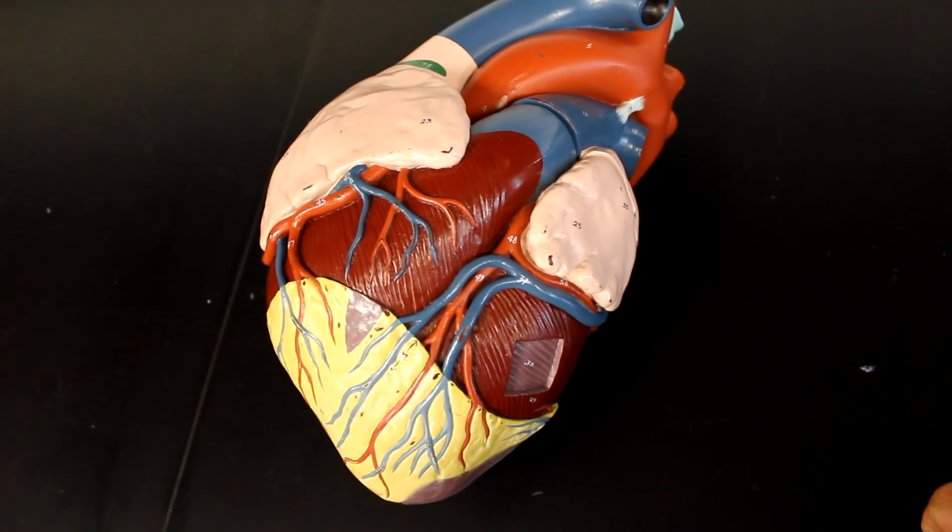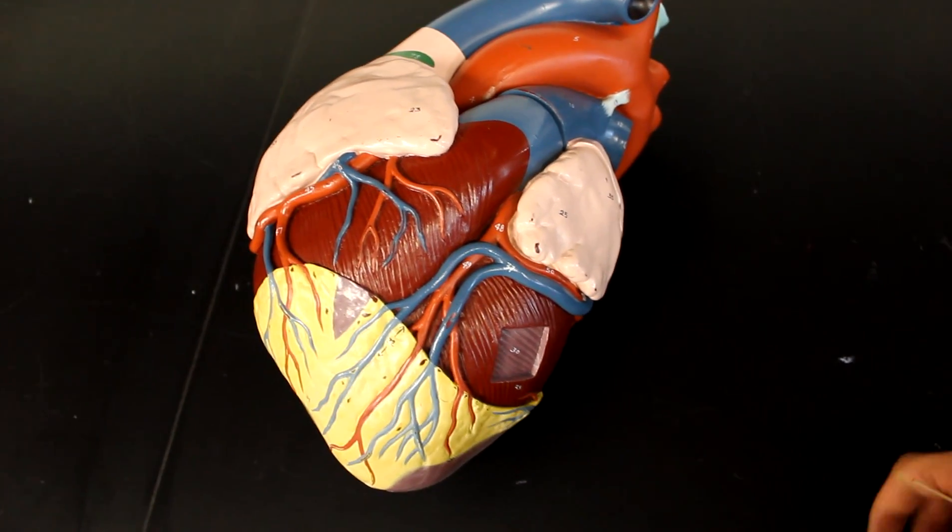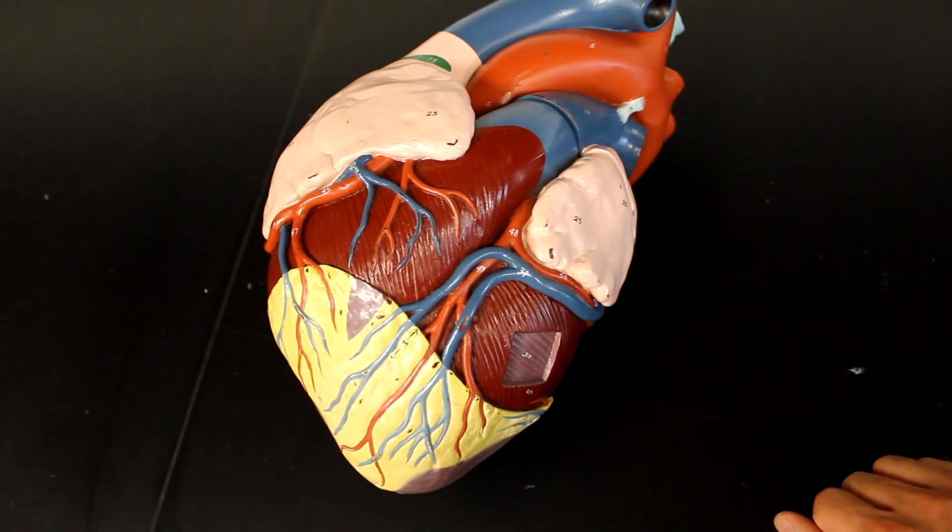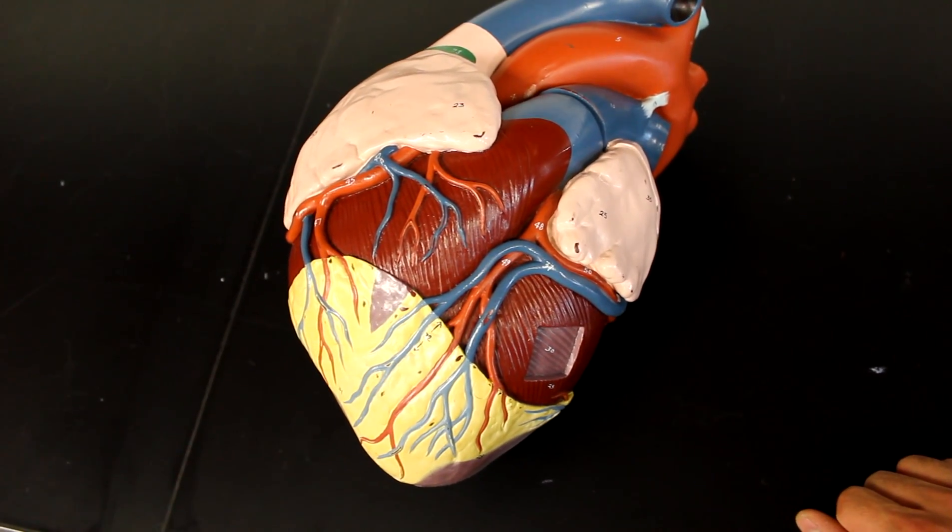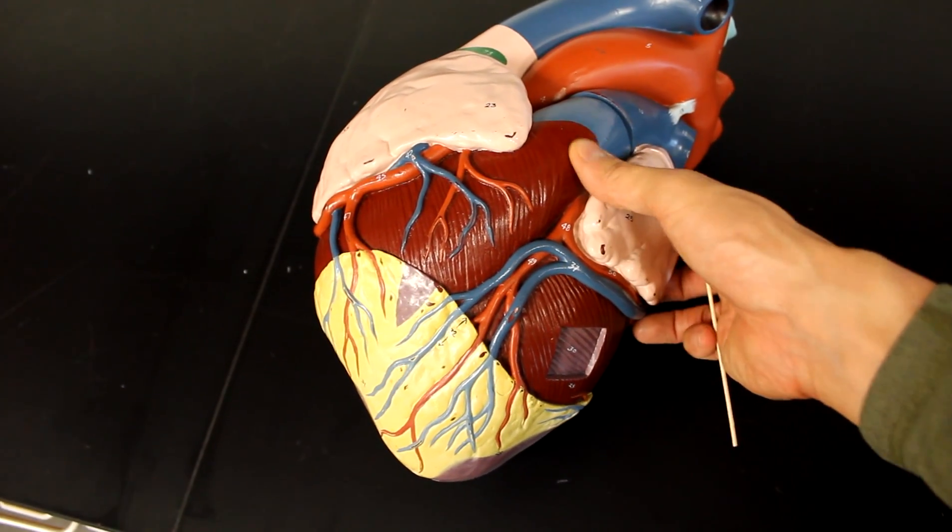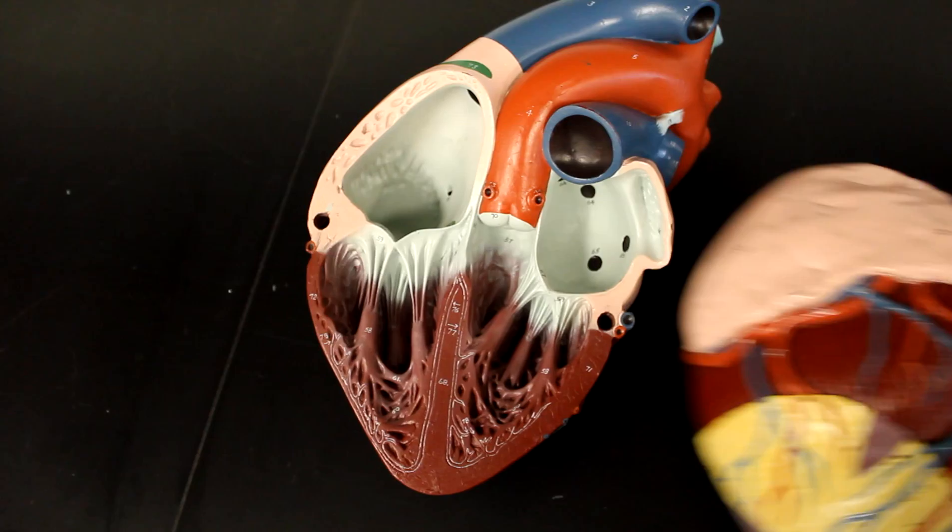Here's the heart model again. We're going to be taking a look at the coronary circulation, or at least the circulation that supplies the heart muscle itself with blood. We really only get this from two arteries that are the first two branches off the aorta.